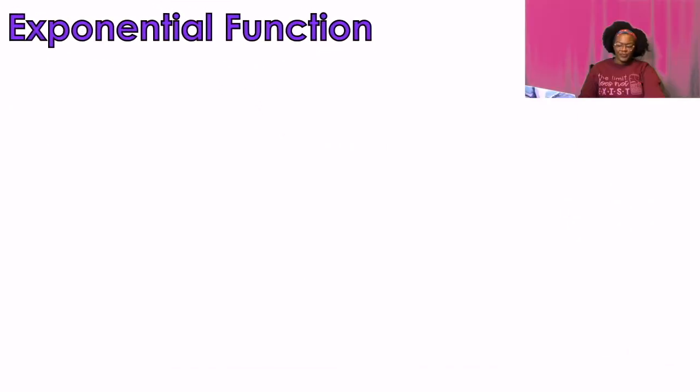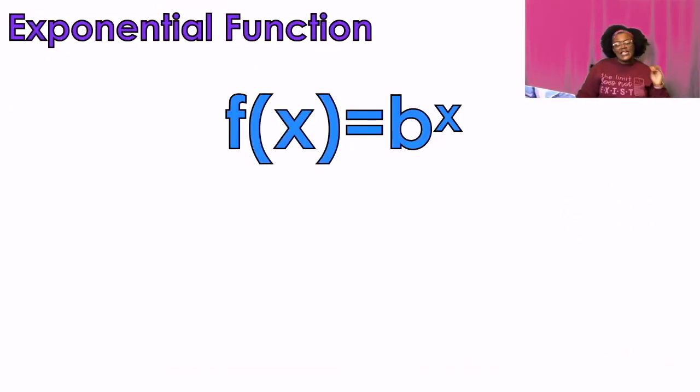So the basic model for an exponential function is f of x equals b to the power of x. This only works if b is greater than zero, and b cannot be equal to one. B cannot be equal to one, because if I just keep putting something one to the power of 15, one to the power of a million, it's still going to be one, again, a constant function. So that doesn't work out for us.